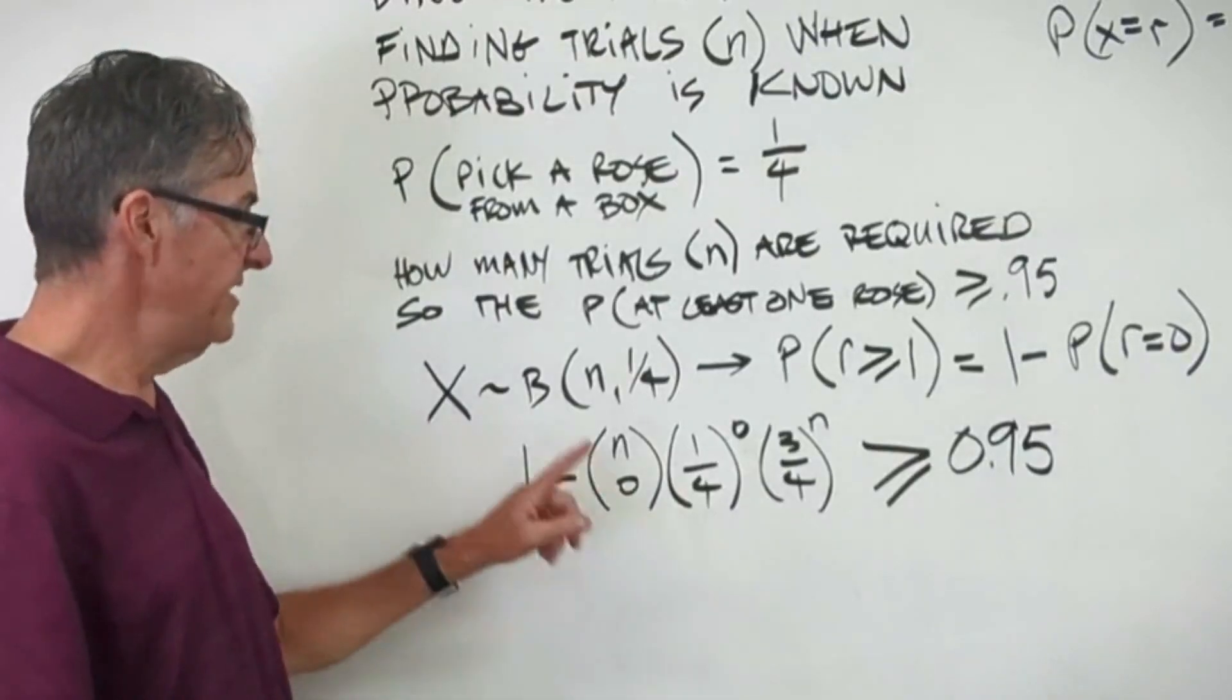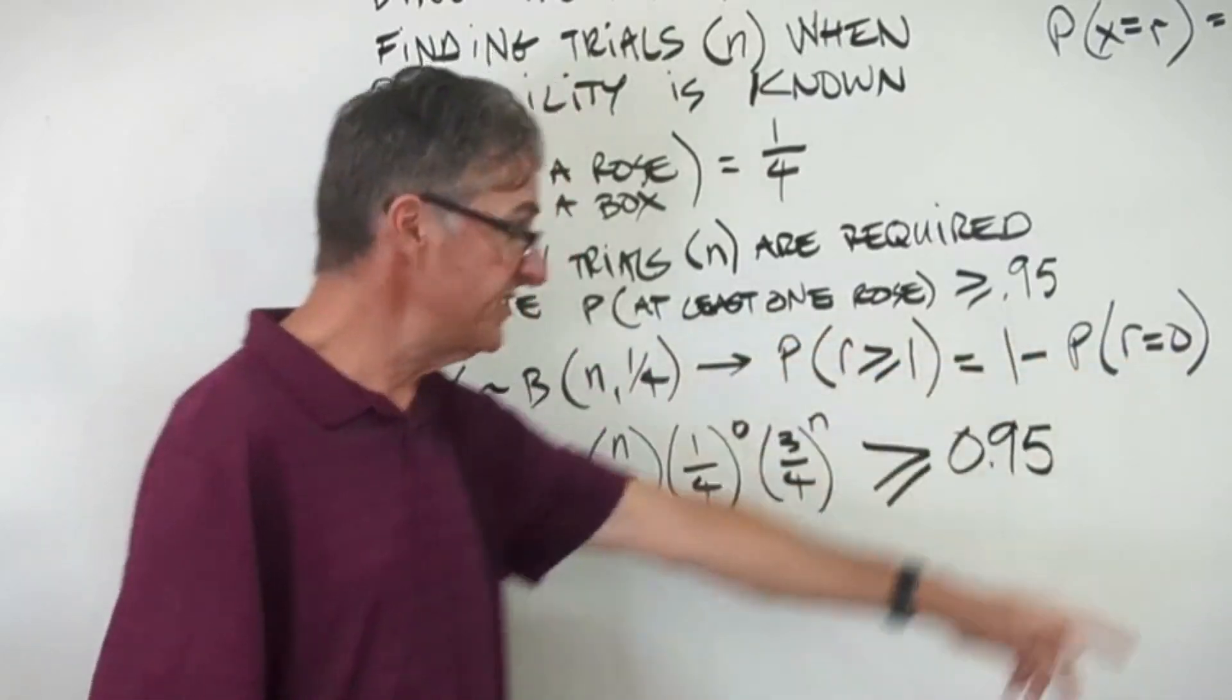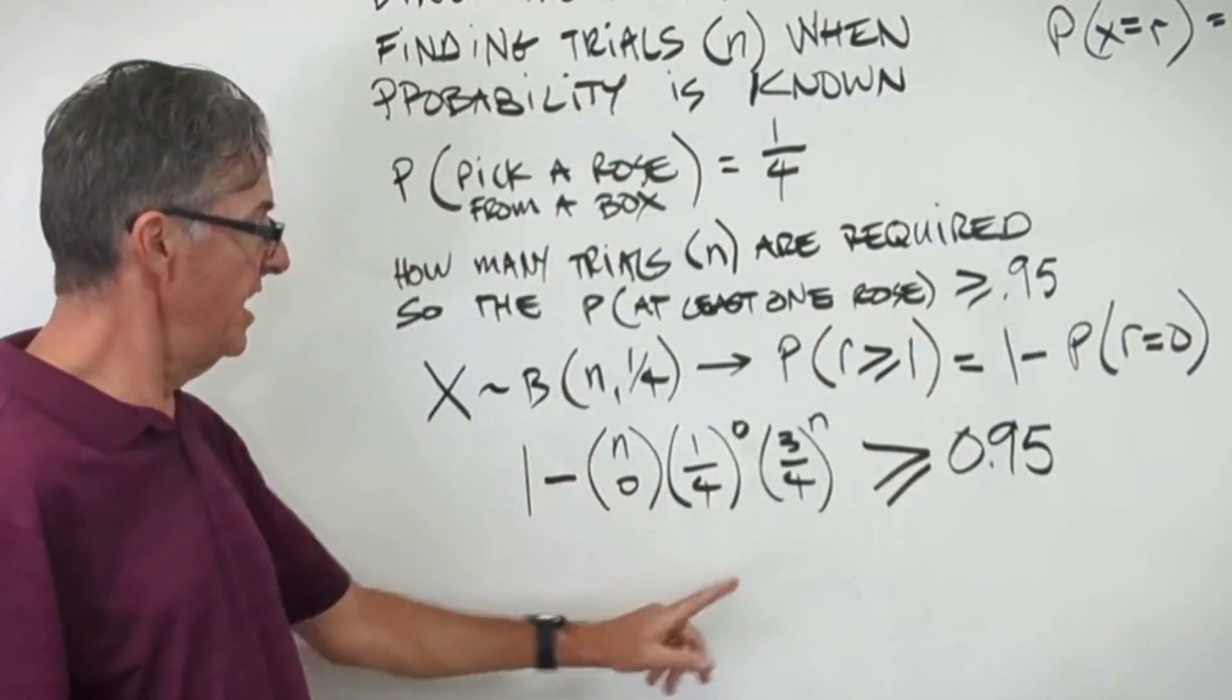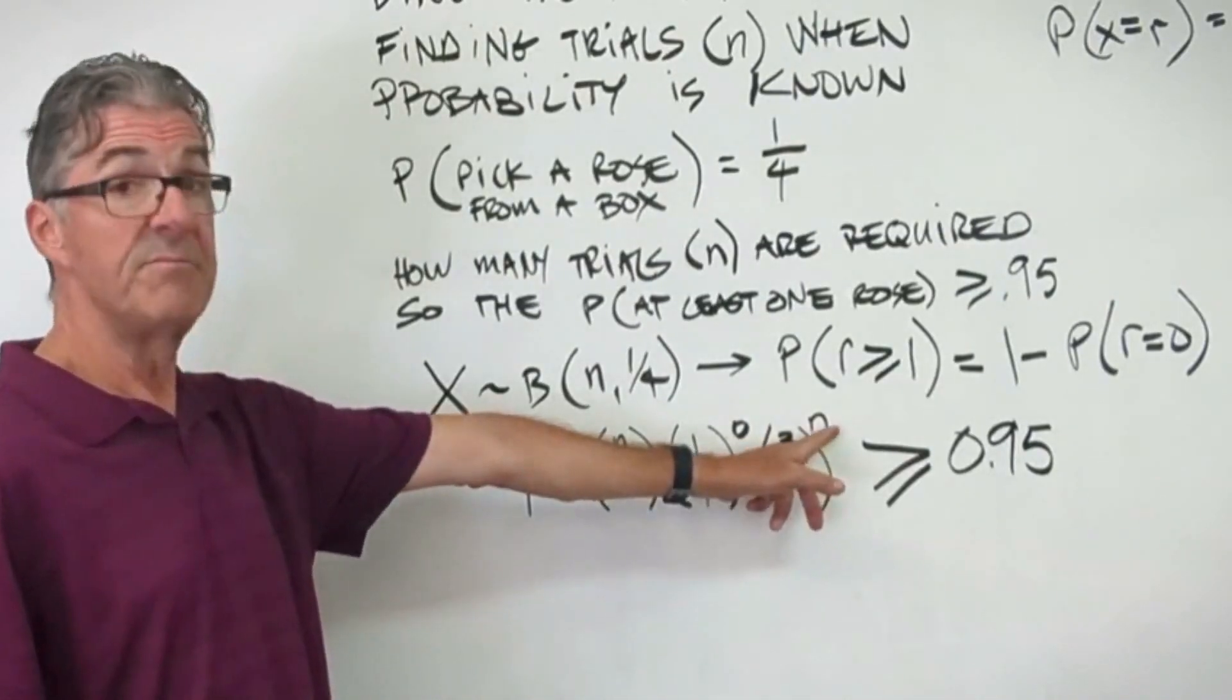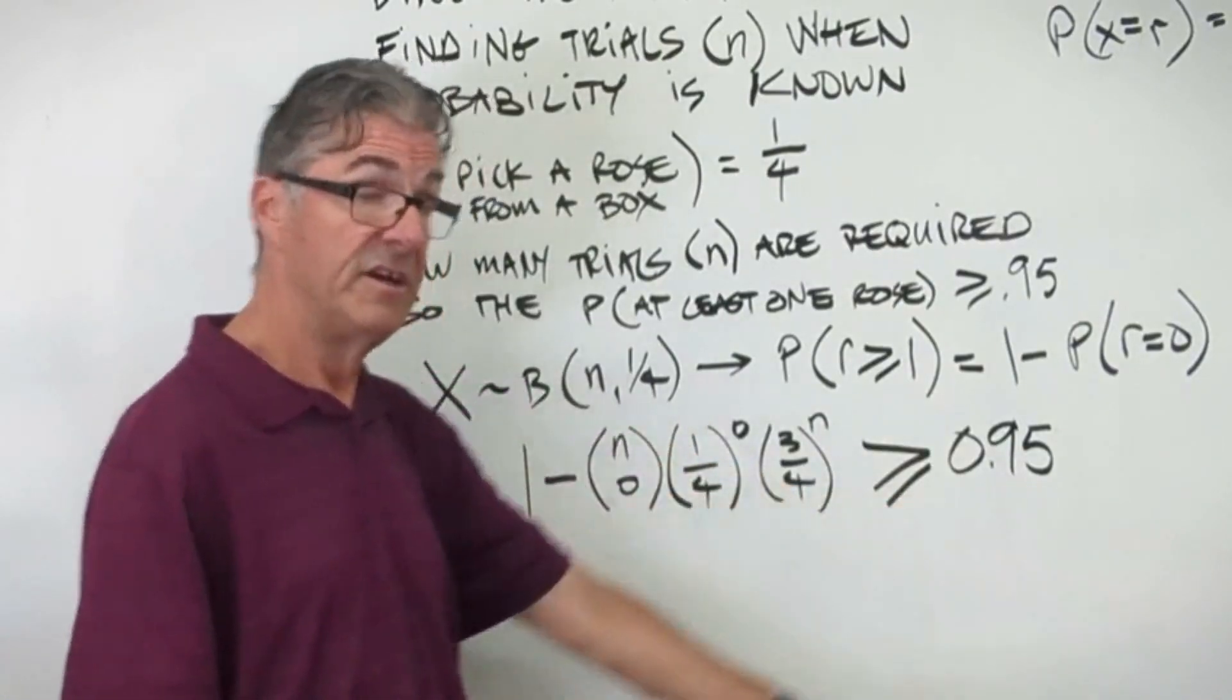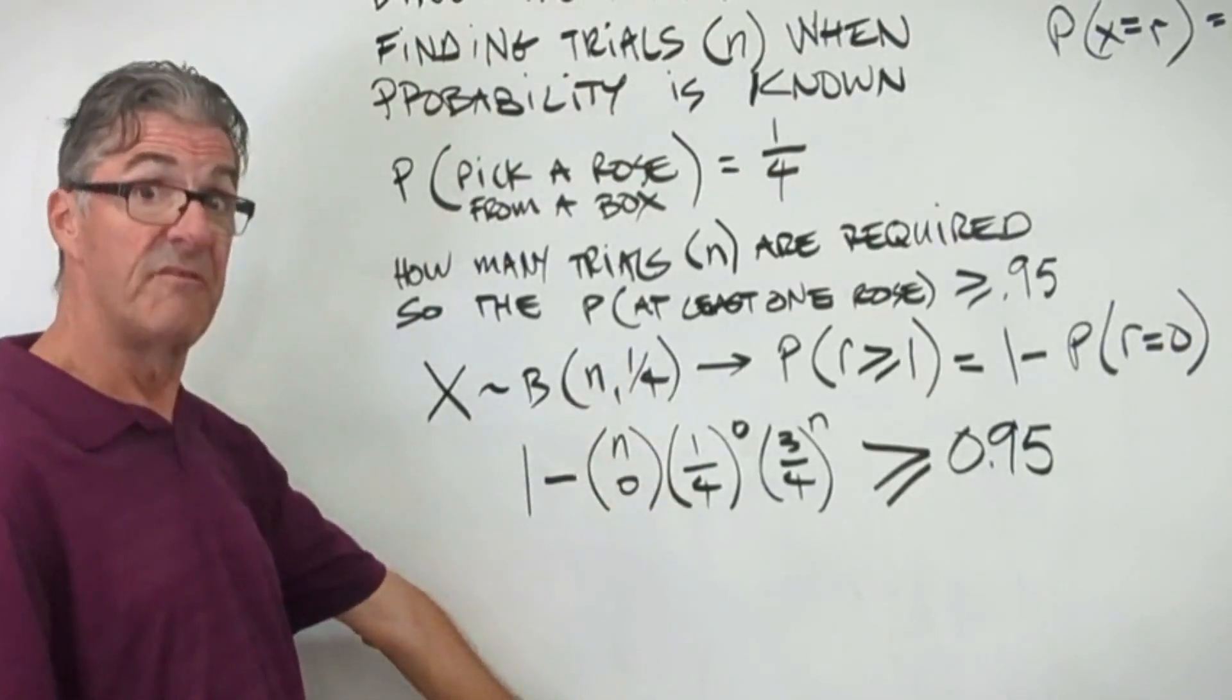Here's my plug-in step. I did my one minus my probability for no successes. So that's n, we still don't know n, but there's zero successes. Here's the probability of a success to the zero power. Here's the probability of failure to the n power. And then this has to be greater than or equal to 0.95. Now pause the video and see how far you can simplify that.